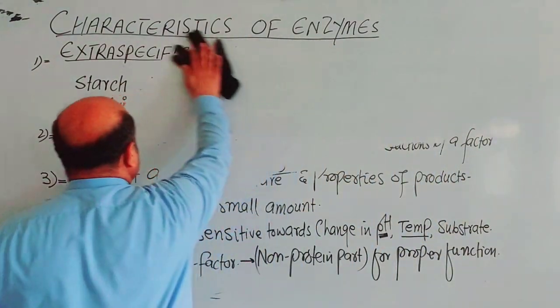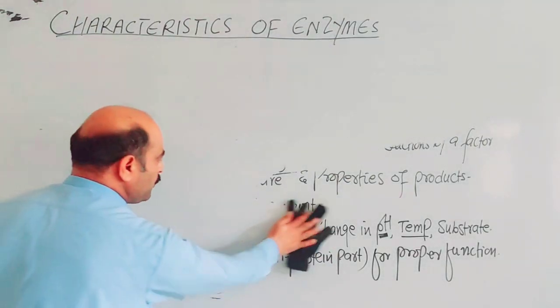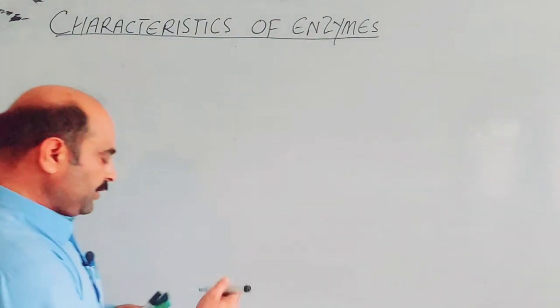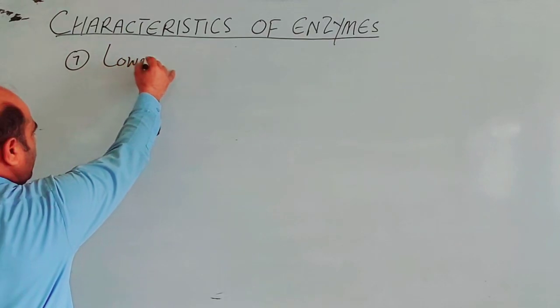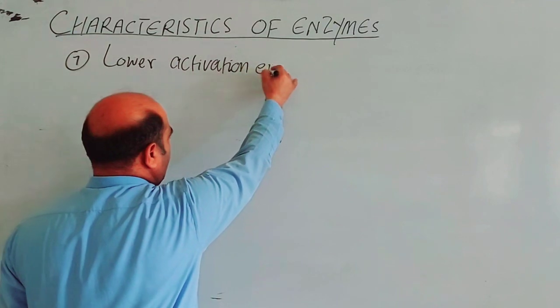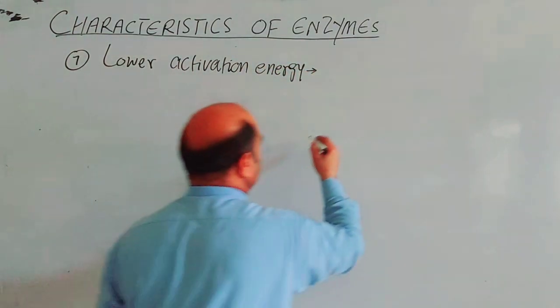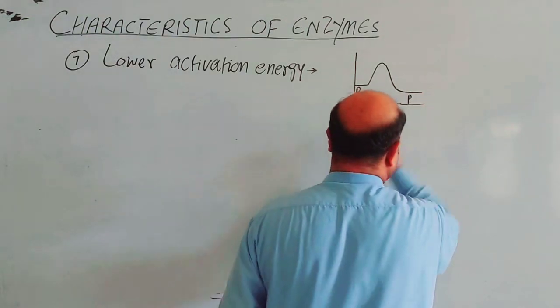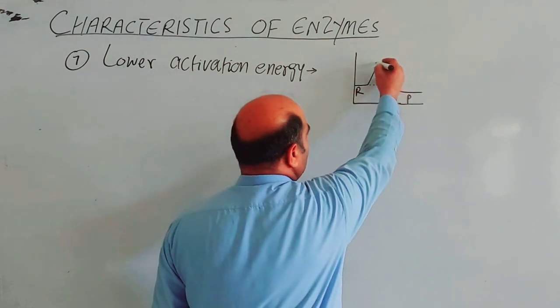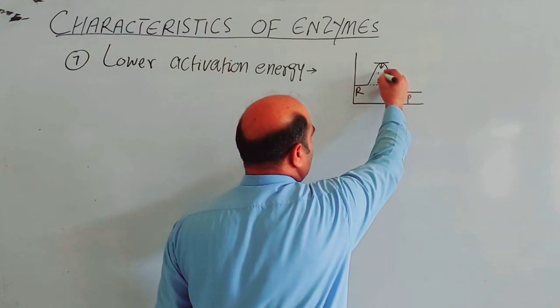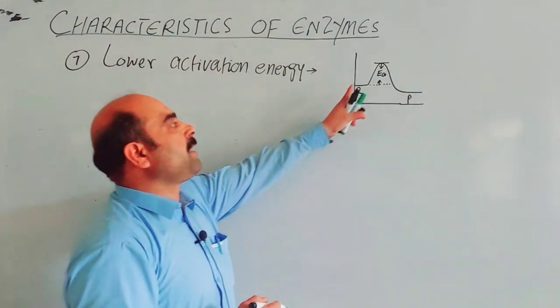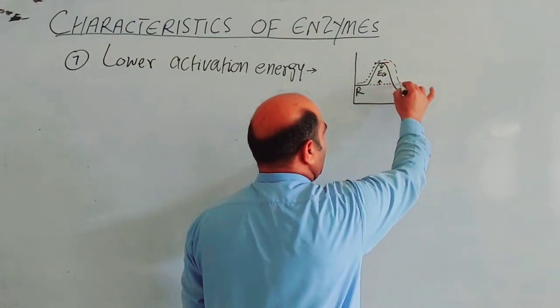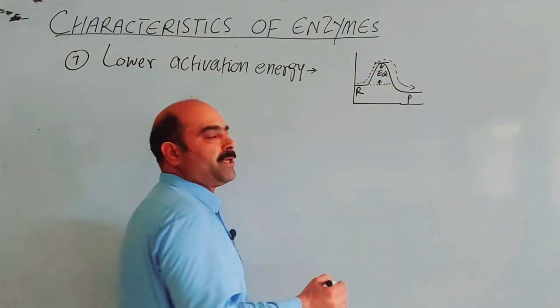The seventh characteristic: lower activation energy. I've already discussed this in previous videos. If you have reactants converting to products, the reactants have average kinetic energy. The highest point shows energy difference—this is activation energy. Reactants must cross this barrier, this obstacle, this hindrance to convert to products. Activation energy is the minimum amount of energy, more than the average kinetic energy, which is required to convert the reactants into products.